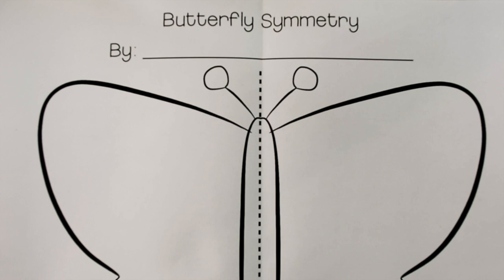So the purpose of this activity is to help kids understand what symmetry is and also that the wings of a butterfly are symmetrical.